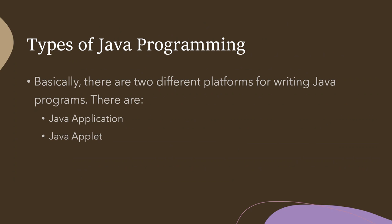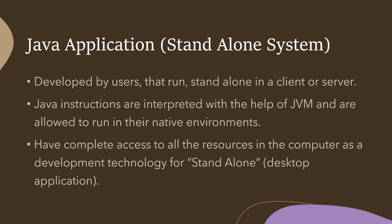Now we will see the types of Java programming. Basically there are two types: Java Application and Java Applets. A Java application is also called a standalone system — you develop a program on a normal computer not connected to the internet or a network. It is developed by users to run standalone on a client or server. In a network, the server provides data to the client (the user's computer), but in a standalone system there is no link between client and server.